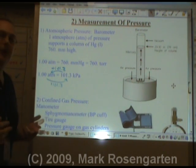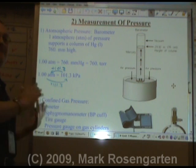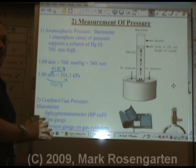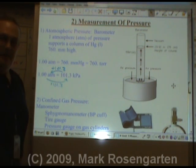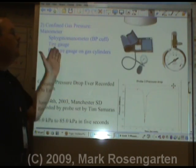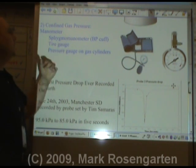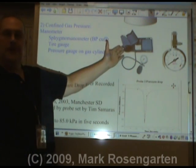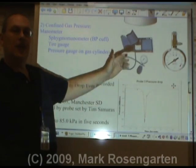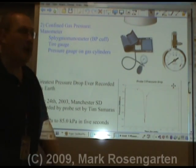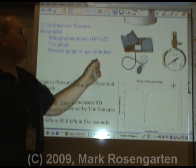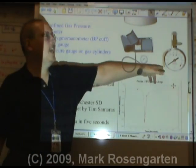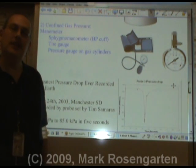When we do math with gases, we call it gas math. If the gas is confined, we use a device called a manometer. A blood pressure cuff is called a sphygmomanometer, and a pressure gauge is used on gas cylinders. You can also use one to find out the tire pressure inside a bicycle or automotive tire.